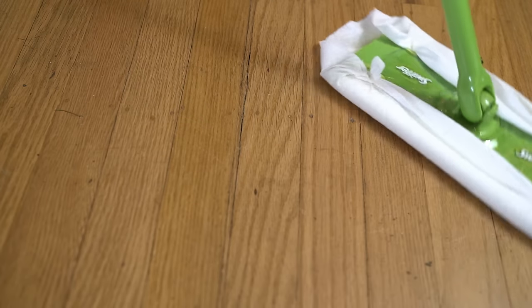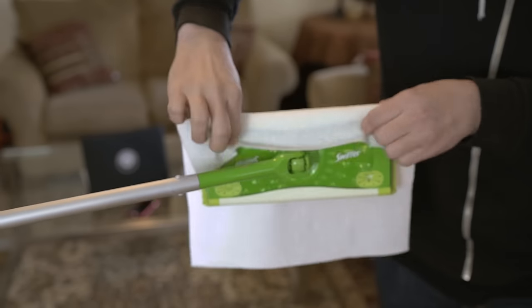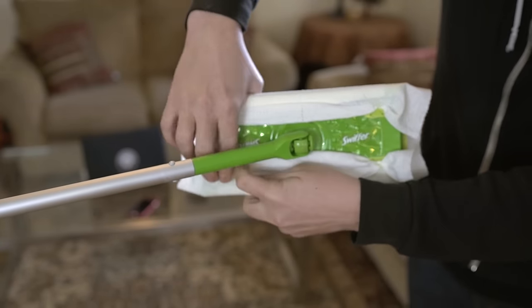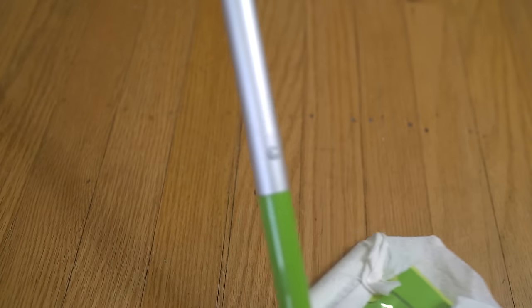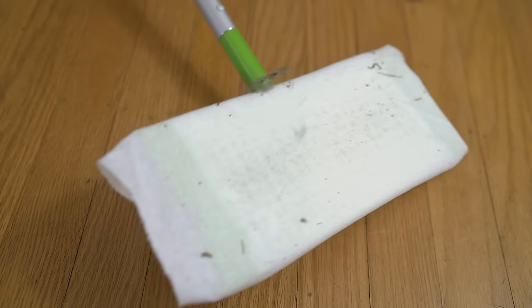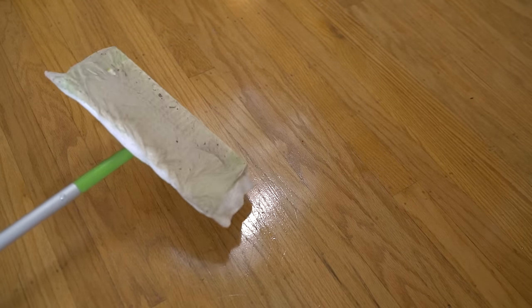Swiffer mops or their generic counterparts are great until you run out of pads. A quick and simple solution: paper towels. It might seem obvious now, but many folks don't even consider it. Just wrap a couple around the base and tuck it into the back slots. Clean as usual, and if you want to do some major cleanups, bust out a multi-surface cleaner and spray around the area for a super shiny finish.